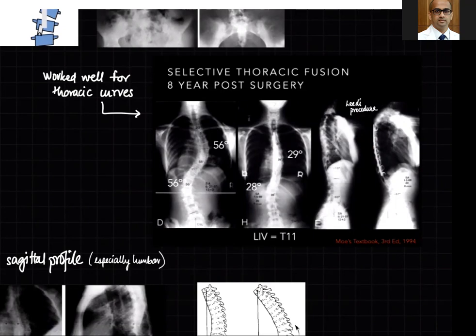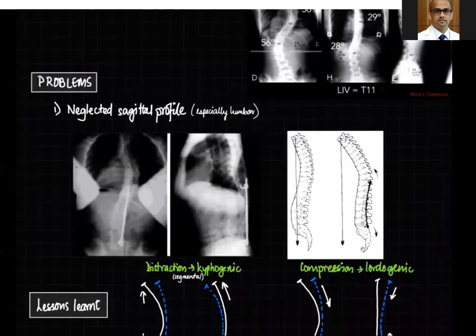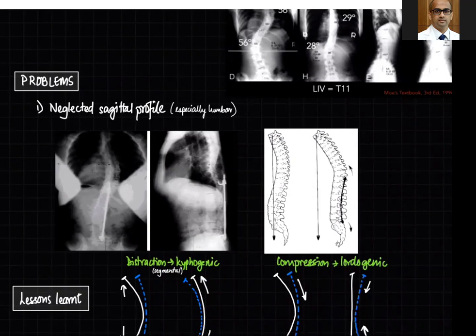The problem with Harrington instrumentation was that it neglected the sagittal profile, especially in the lumbar spine. If you distract between two points in the lumbar spine, you are going to get a flat back. This is exactly what happened — it caused the flat back syndrome.